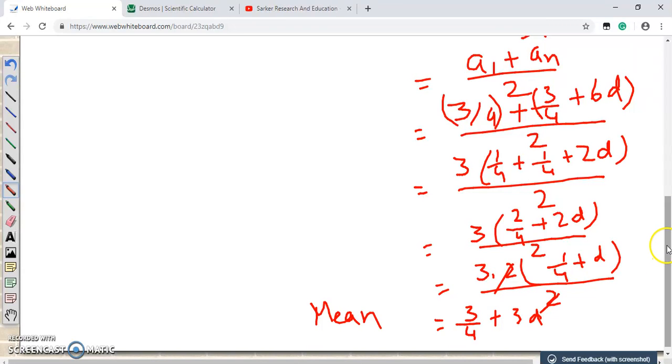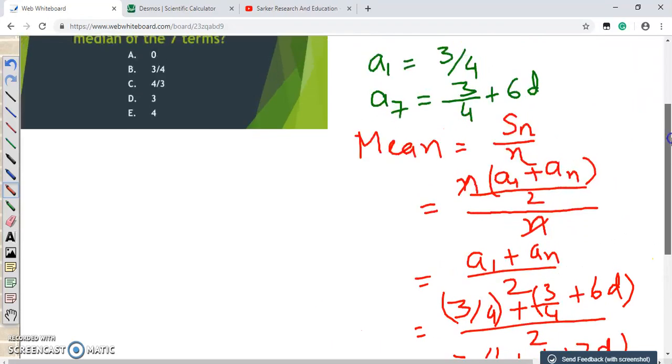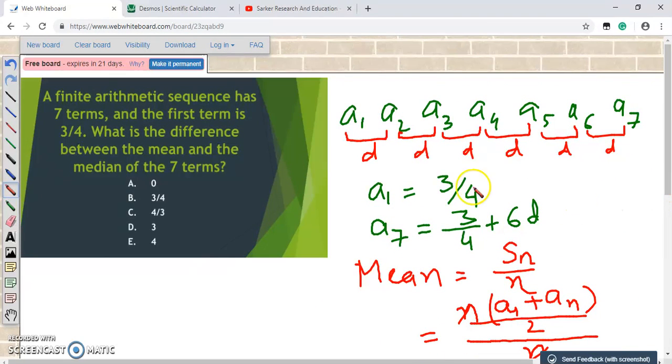Now let us just find out the median. In order to find out the median, we will have to see if this is an odd number or an even number. How many numbers we have? We have 7 numbers. 7 is an odd number. So in that case median is just the middle number. So what is the middle number here? So 3 numbers on the left, 3 numbers on the right. So a4 is the middle number or a4 is the median.